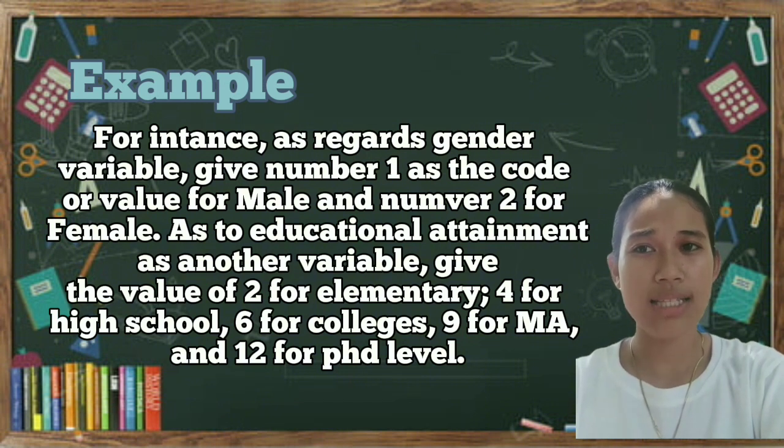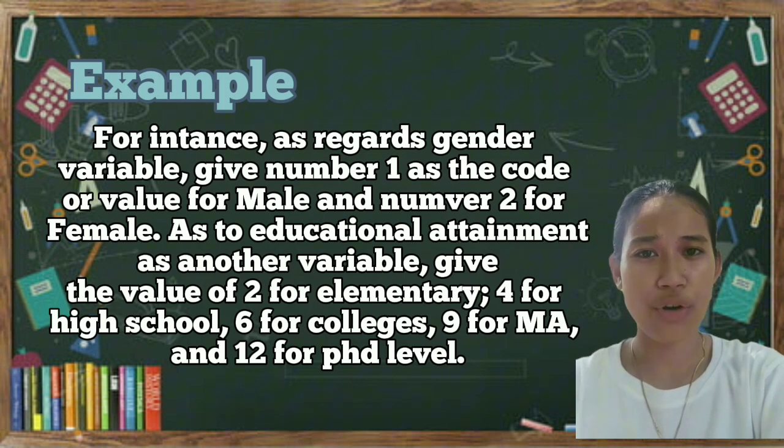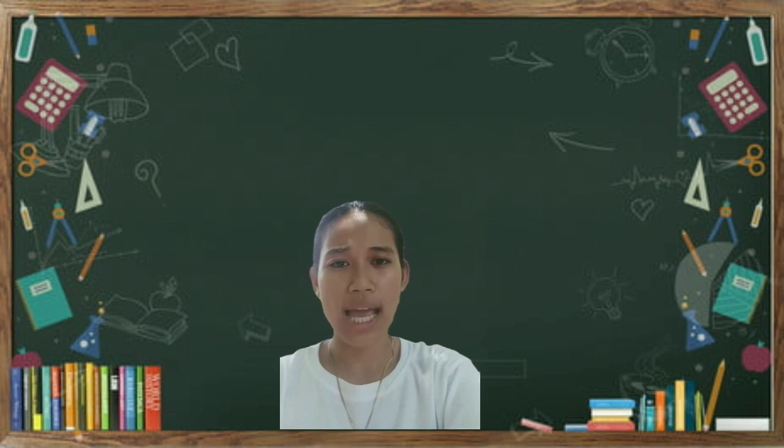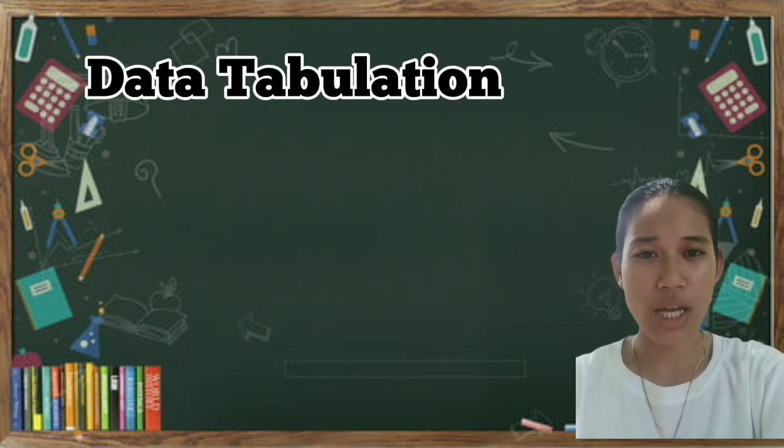So, another example. For example, let's say educational attainment, which is another variable, the values you can give a code is 2 for elementary, 4 for high school, 6 for college, 9 for MA, and 12 for PhD level. This is what I've been saying you first. You have to have the coding system which is actually the first step in preparing data. And the second one is data tabulation.